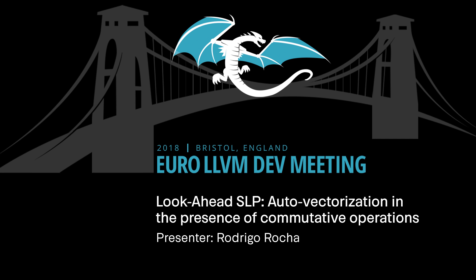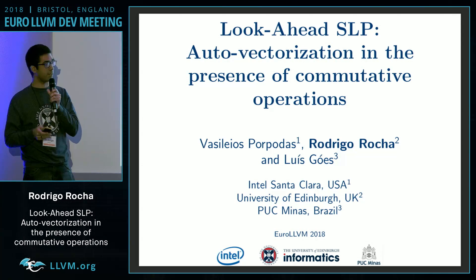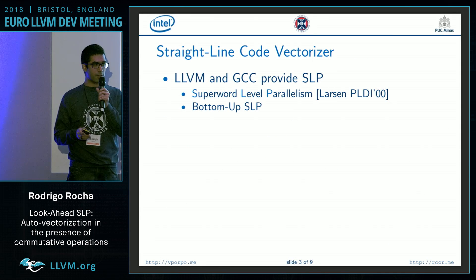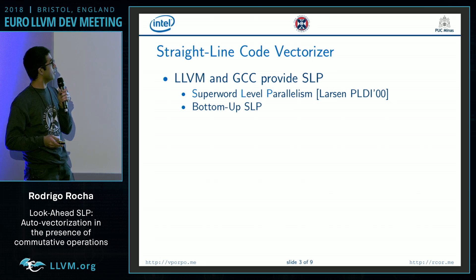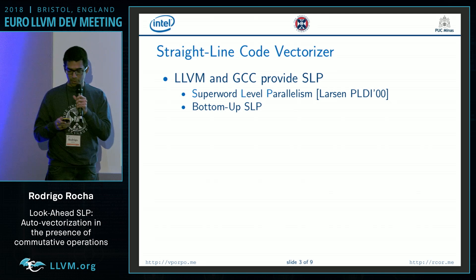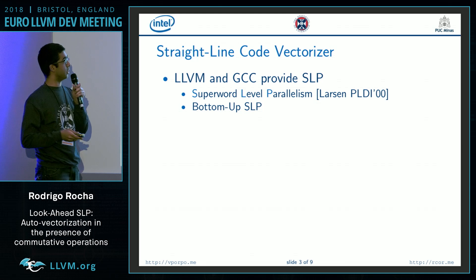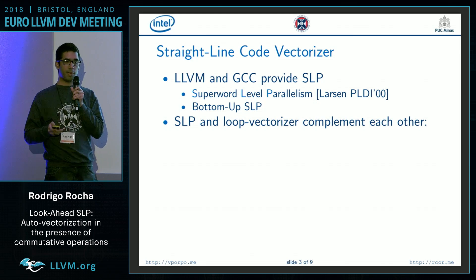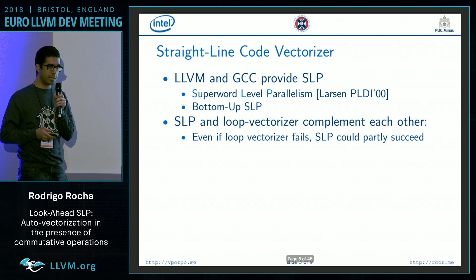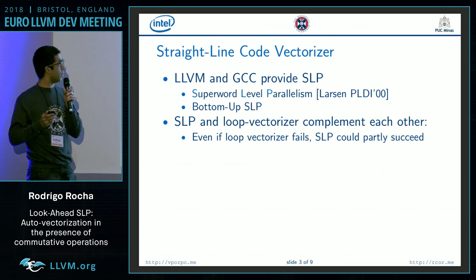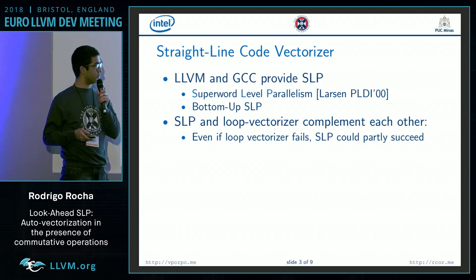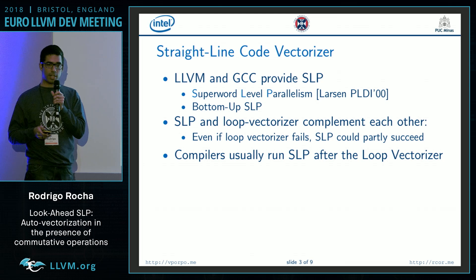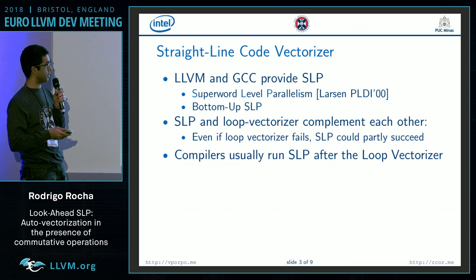I'll be talking about how to leverage commutative operations to improve auto vectorization, focusing in particular on straight line code vectorizers. Both LLVM and GCC implement the SLP vectorizer, and SLP and loop vectorizer complement each other. There are cases where SLP can partially succeed where the loop vectorizer fails, so it's common practice to run SLP after the loop vectorizer.